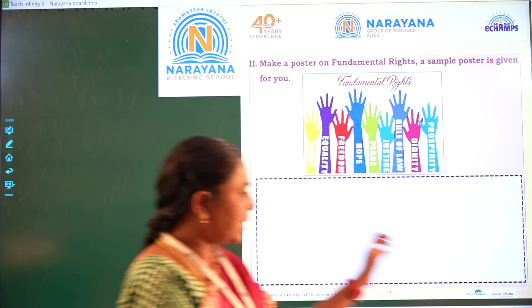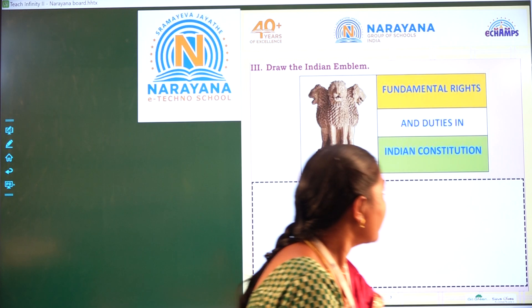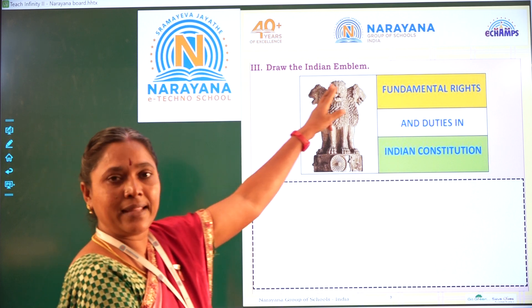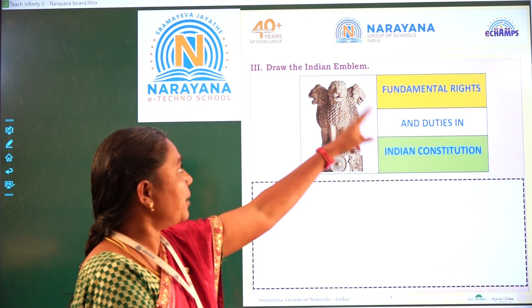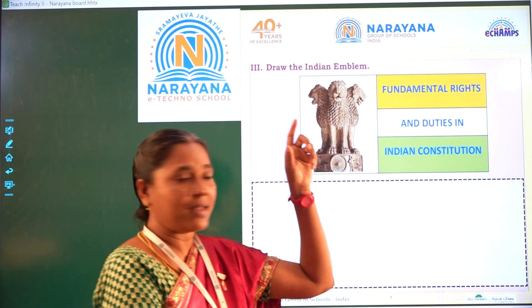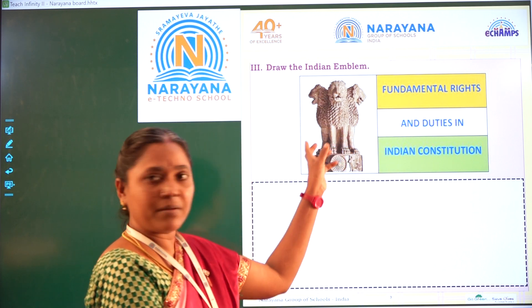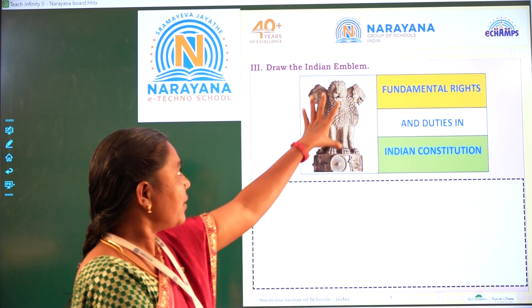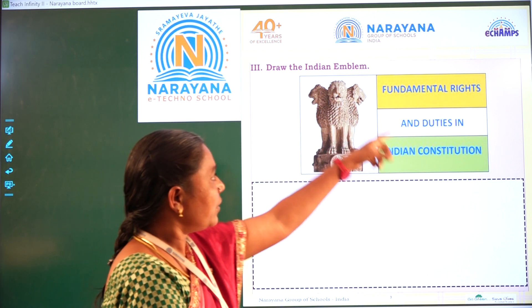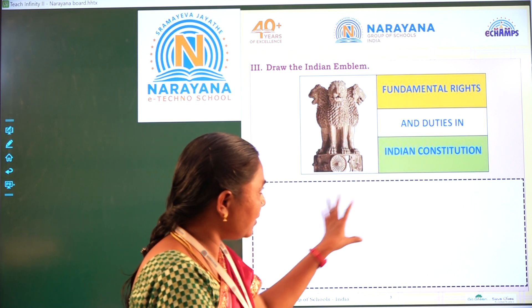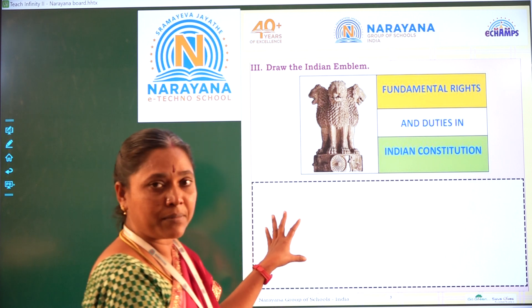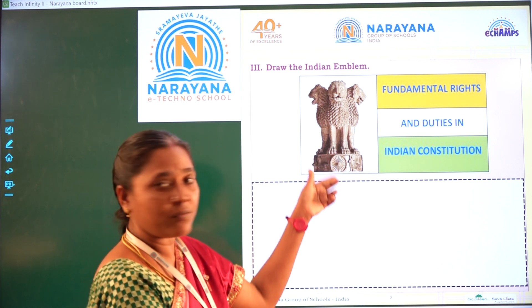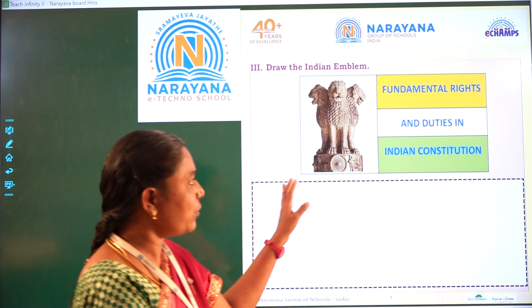Colour it. Okay children, next — draw the Indian emblem. See here, in the Sarnath pillar, the Ashoka emblem is there — same. Our Indian emblem, this is what you can draw here in this page. It is in workbook, page number 104.